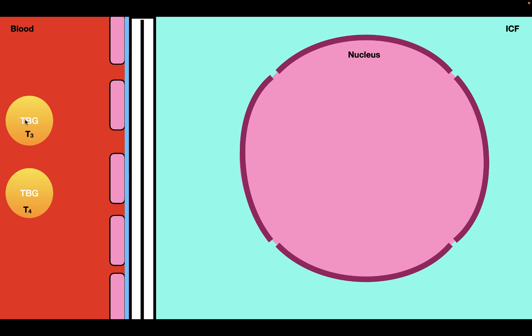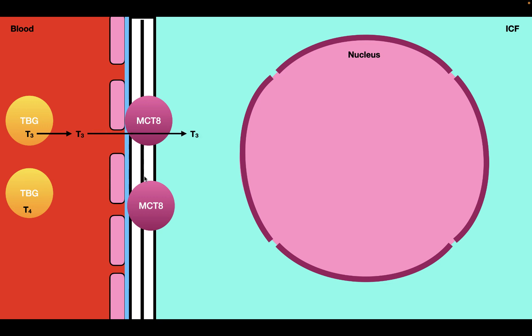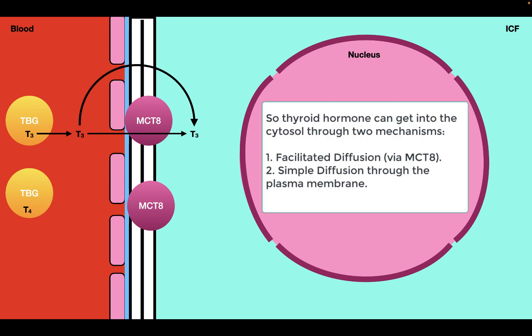In order to exert its effects, thyroid hormone has to get inside the cell. The first mechanism is through MCT8, a carrier protein that carries free thyroid hormone into the cell through facilitated diffusion. So when T3 frees itself from the binding globulin and becomes free thyroid hormone, it will be carried into the cytosol by MCT8. In addition, T3 can also move into the cytosol through simple diffusion by diffusing across the plasma membrane.